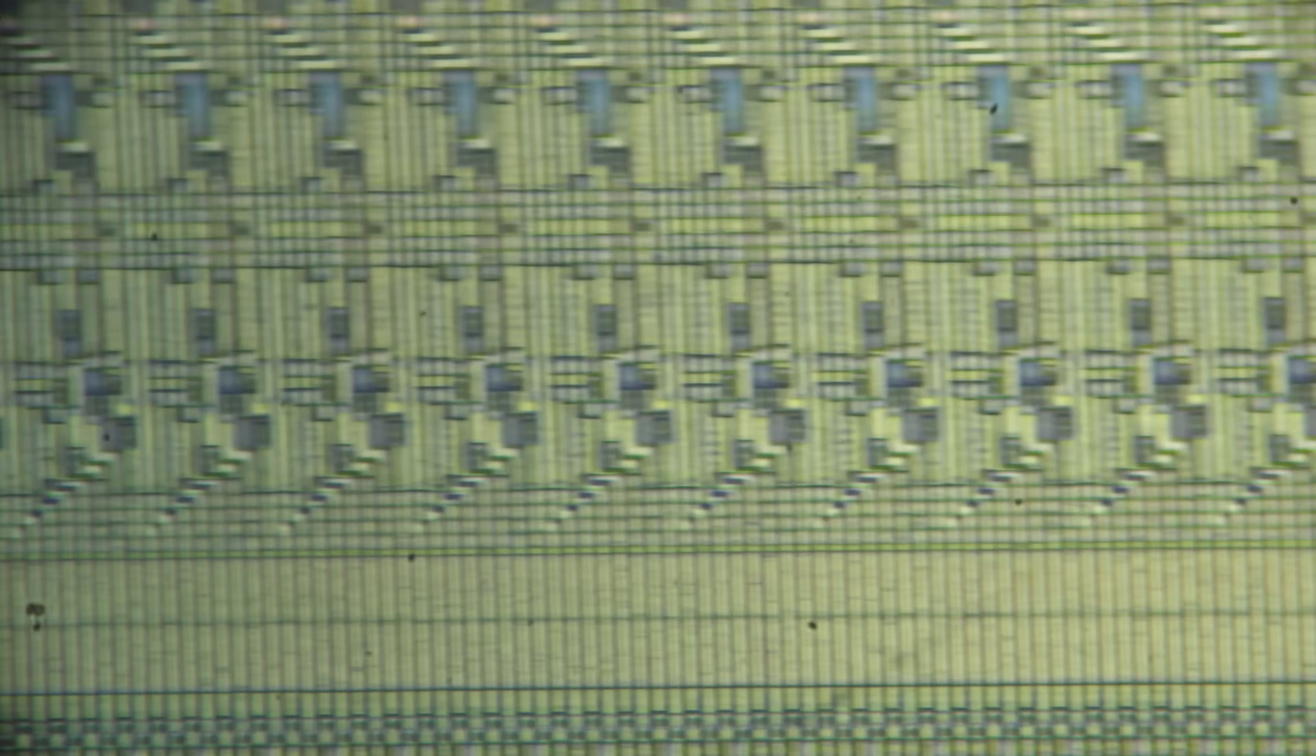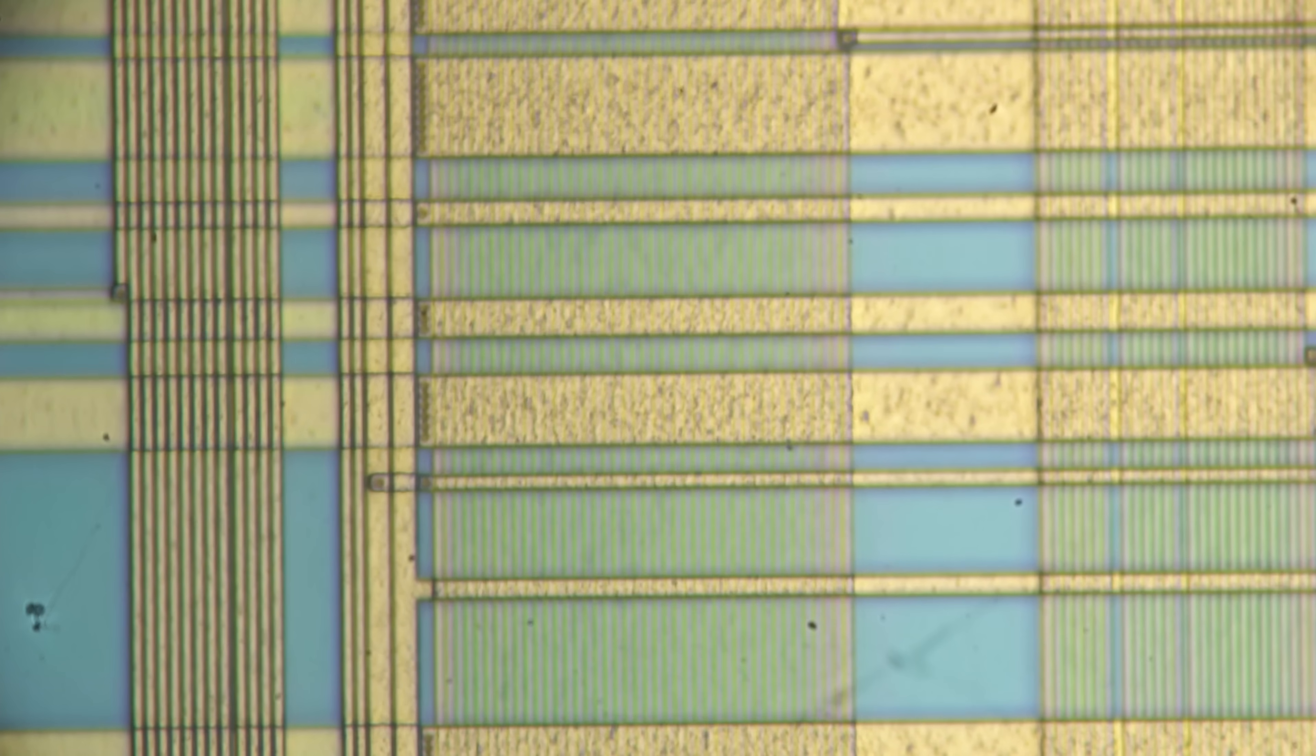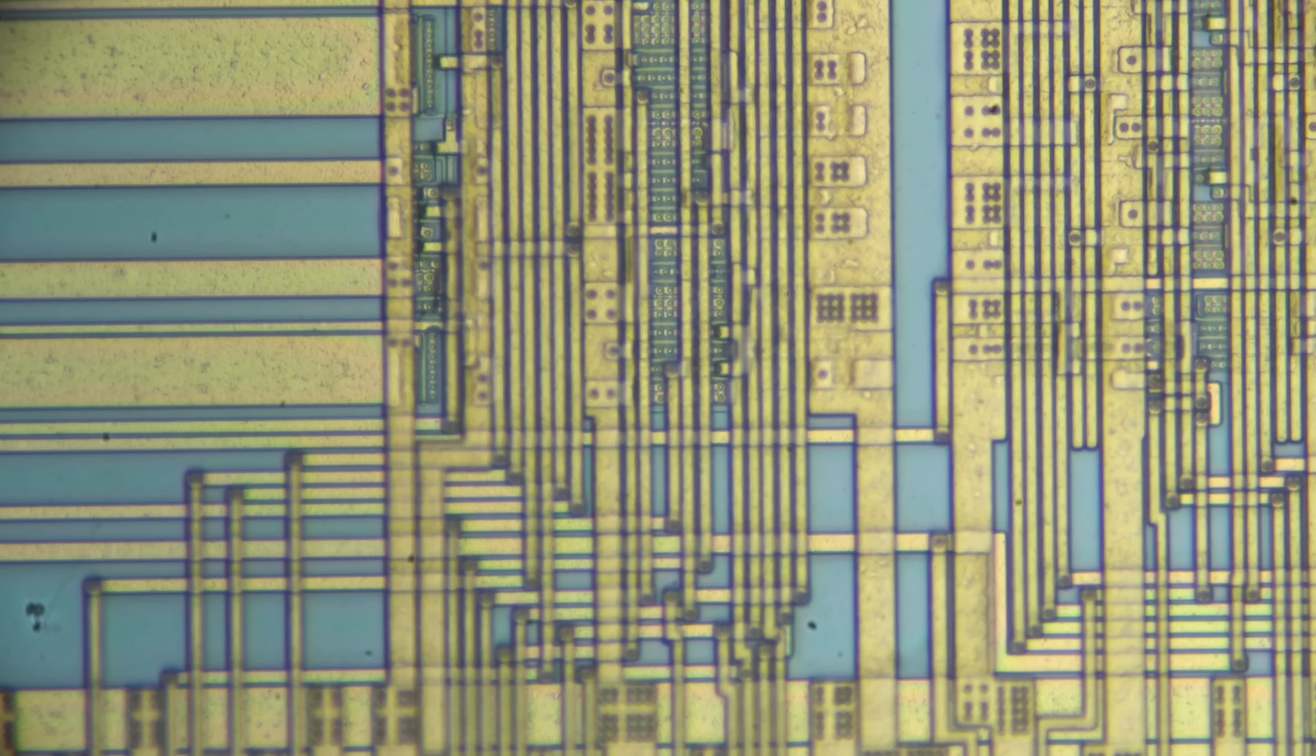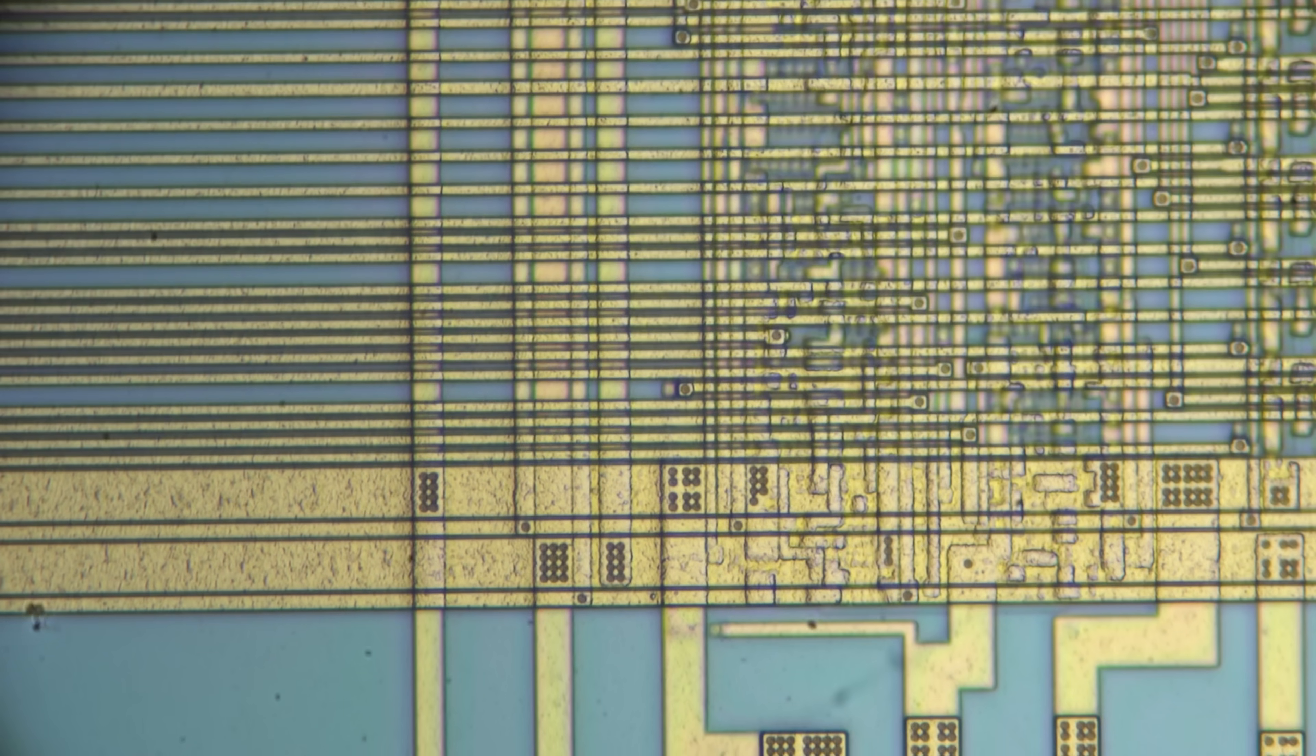Along the periphery are blobs of gold attached to delicate bonding wires. These serve to move data and power onto and off the silicon wafer, communicating with the outside world.